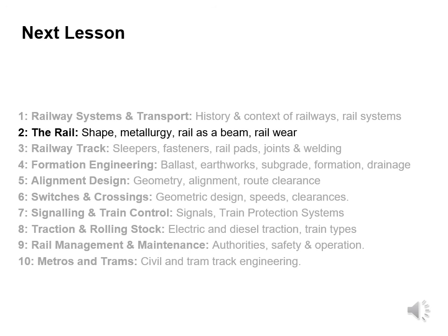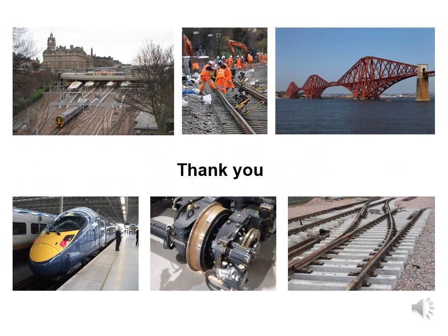In the next unit, Unit 2, we're going to look at the rail — in particular the shape, metallurgy, the rail as a beam, and rail wear. That's the end of Part 2 of Unit 1. Thanks for listening and bye for now. We'll see you next time.